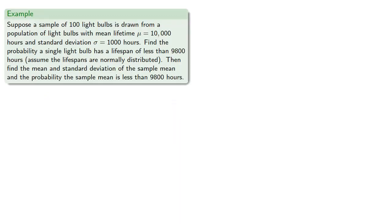Suppose we have a sample of 100 light bulbs drawn from a population with a mean lifetime of 10,000 hours and standard deviation of 1,000 hours. Find the probability a single light bulb has a lifespan of less than 9,800 hours, assuming lifespans are normally distributed. Then find the mean and standard deviation of the sample mean for the sample of 100 light bulbs, and the probability the sample mean is less than 9,800 hours.